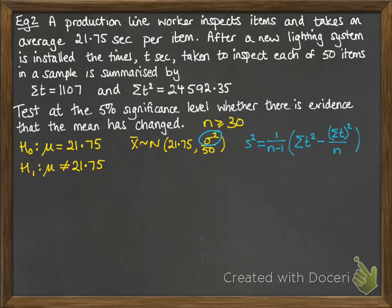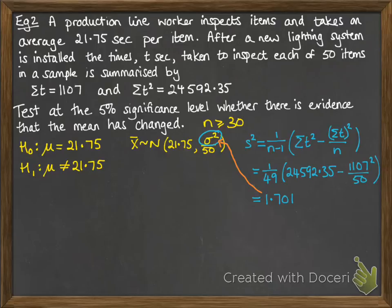We use that formula you've seen before for working out the unbiased estimate of the variance. Put those numbers in that we've been told in the question, and we get 1.701, and that's what we'll put into our parameter here for the normal distribution of x̄.